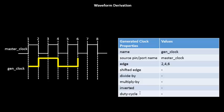Out of the generated clock definition already present in the constraints, we can always derive a waveform and use it for analysis. If you look at this waveform, the frequency is half of that of the master clock — basically a divide-by-two circuit. The only change is there is a phase shift of 90 degrees. There is a phase shift with respect to the master clock, and to define this phase shift, there is no other option given to the user. That's why the edge is a very good option to define this kind of waveform.